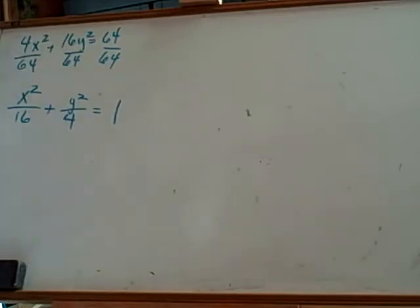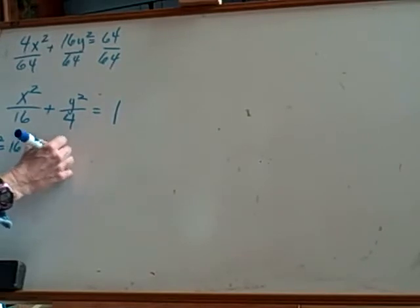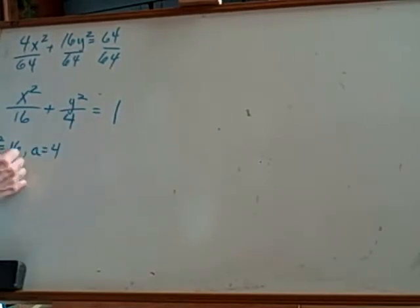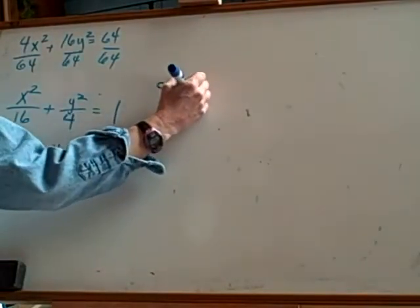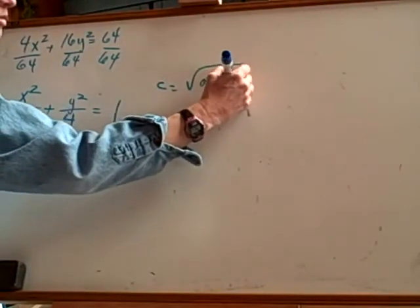So we're going to say A squared equals 16. So what's A equal? A equals 4. A equals 4. B squared equals 4. So B equals 2. Now I know A and B. Can I find C? Yes. Yes. I'm going to use the C equals the square root of A squared minus B squared.